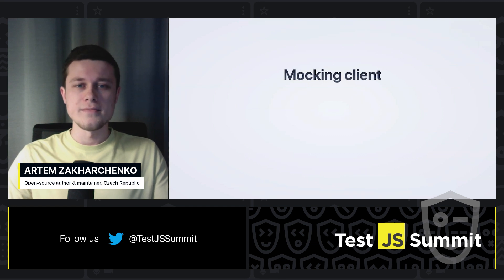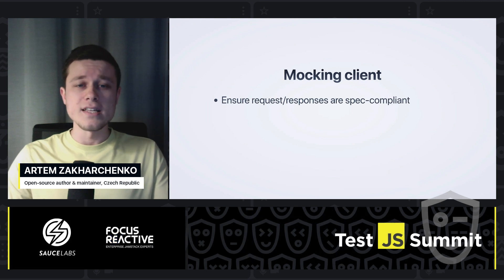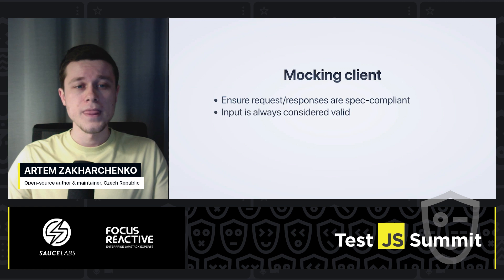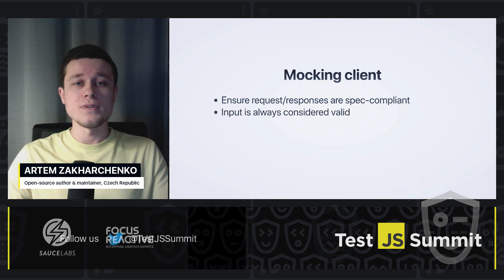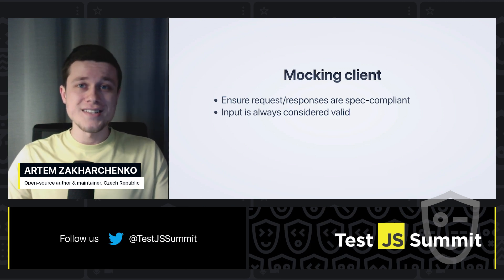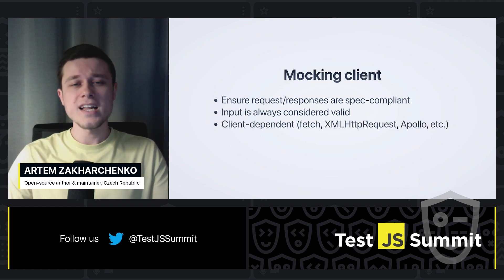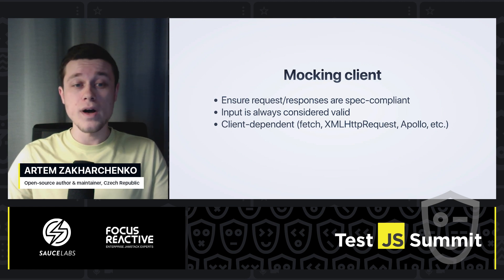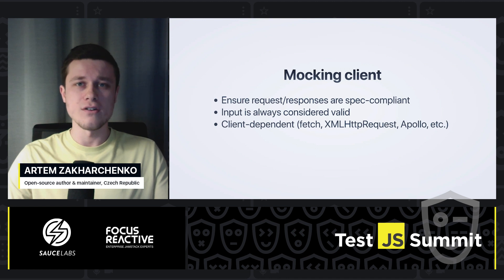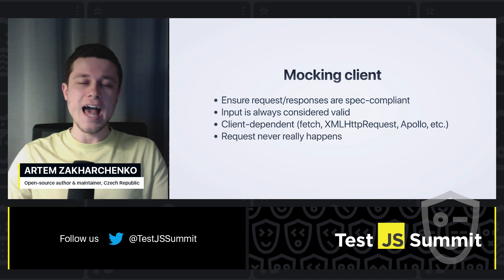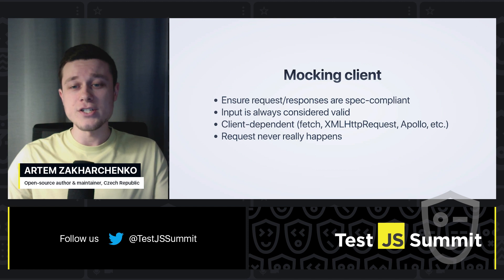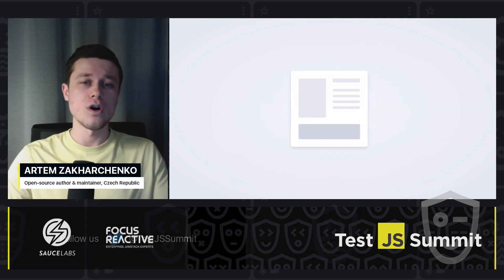There are also a couple more issues with mocked clients. Because we're taking out the client and replacing it, we need to ensure that requests and responses make sense — that they are spec compliant and similar or identical to what is going to happen in the actual app. The input to such a mocked client is also always considered valid, so unless we somehow validate the requests and responses, the mocked client is going to digest them even if they have a typo. Then clients are quite different — the way requests and responses are handled in fetch may be different for XHR and Apollo — so we need to account for that as well. This creates a very tight coupling between our mocking and actual libraries we use, which makes it very hard to migrate and to see our software evolve. The worst thing is that requests never happen with the mocking client — so the actual logic never executes.